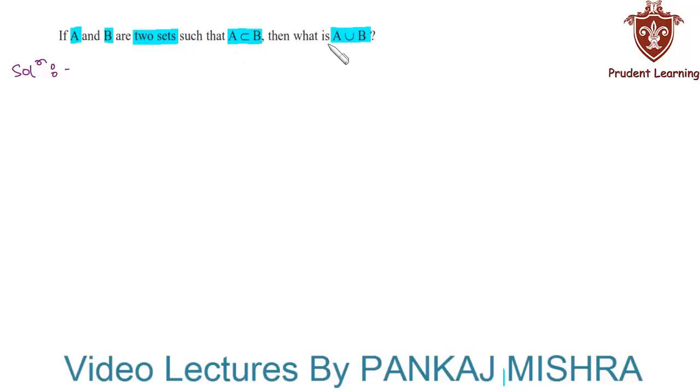This is a very easy question because we know that if A is a subset of B, then A union B is nothing but set B itself. Now let's try to prove it using an example.